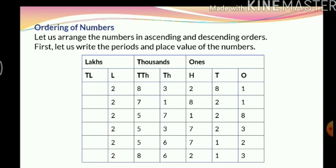We have 6 numbers here and all 6 of them are 6-digit numbers. We will start comparing the values, beginning with the lakhs place. As you can see, for every number the digit in the lakhs place is 2, so we cannot make any comparison there. We move on to the next place value, which is ten-thousands. Here we look for the greatest number. The greatest digit here is 8, but we have two 8s. So we go to the next place value — thousands. In these two numbers, one has 3 and the other has 6.